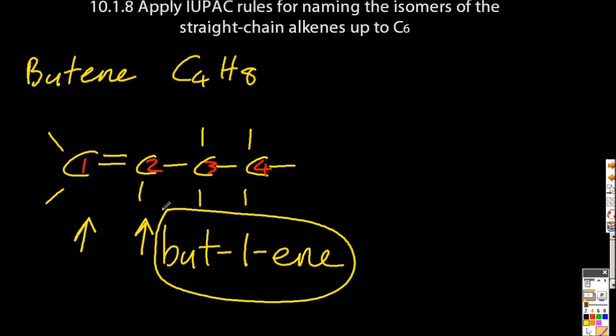Remember, always try to get the lowest number when you name stuff. So but-2-ene, well, that's going to have the double bond between the 2 and the 3.